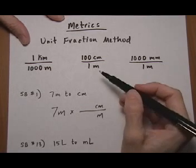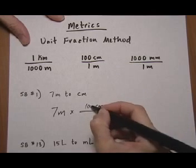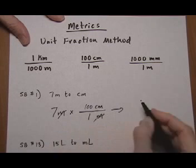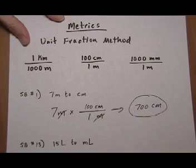So we look up top for the conversion. Well, there's a hundred centimeters per meter. We're really multiplying by one, so it's okay to do that. Meters cancel, seven times a hundred, seven hundred centimeters, and we have our answer.